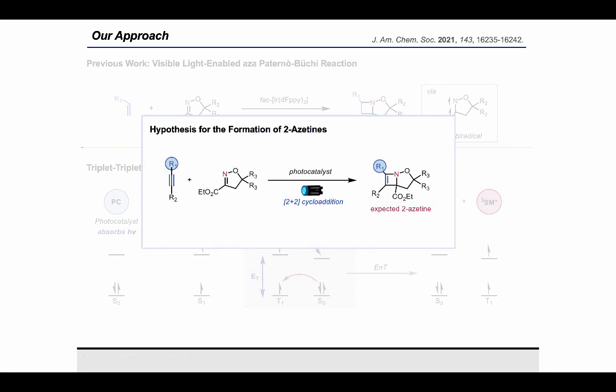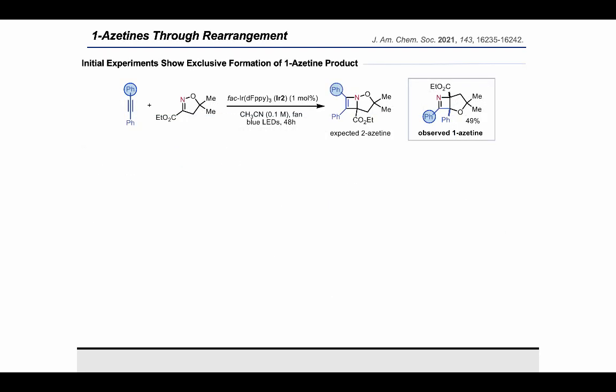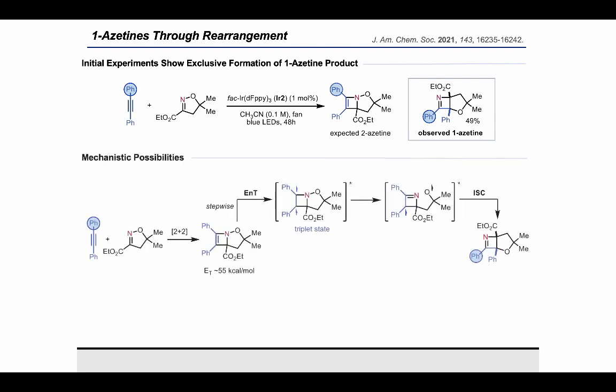We hypothesized that we could access the desired 2-azetine products from the same isoxazoline starting material through 2+2 cycloaddition with an alkyne rather than with an alkene. However, very interestingly, when we screened the first reaction using our previous conditions, we observed a rearranged 1-azetine product rather than the expected 2-azetine. This was really interesting and exciting to us. Our initial hypothesis was that the reaction was proceeding to form the expected 2-azetine. However, due to our choice of diphenylacetylene as the alkyne coupling partner, this 2-azetine intermediate would also have a low triplet energy due to the stilbene-like functionality of the alkene. This would allow a second triplet energy transfer step to occur, generating a triplet excited state which could rearrange in a stepwise fashion to the observed 1-azetine product.